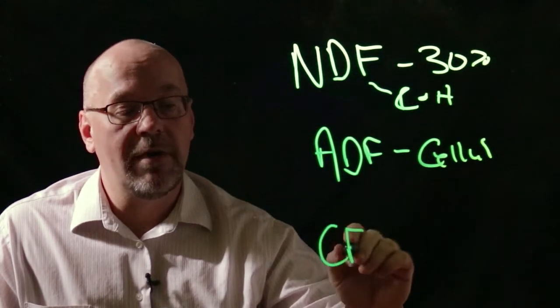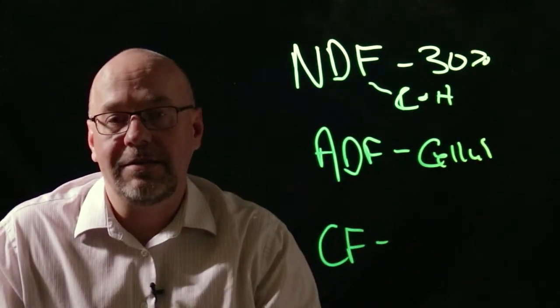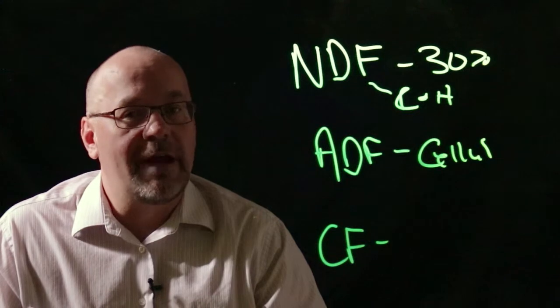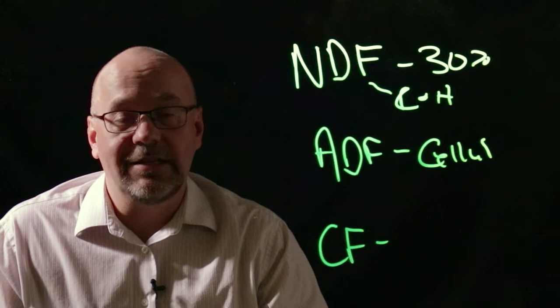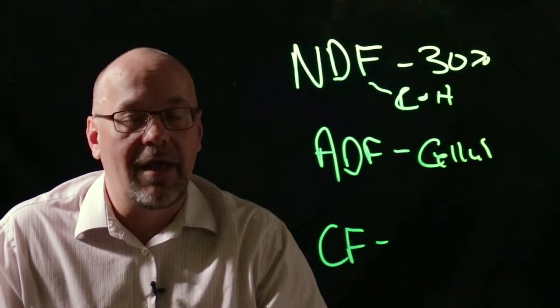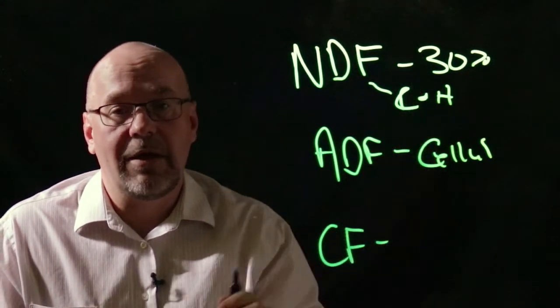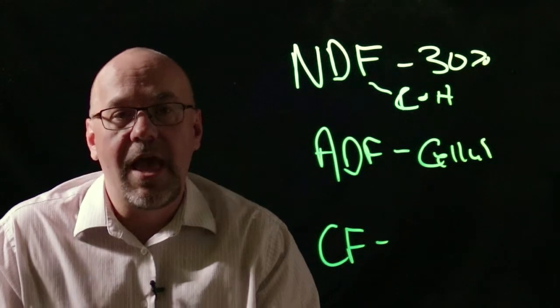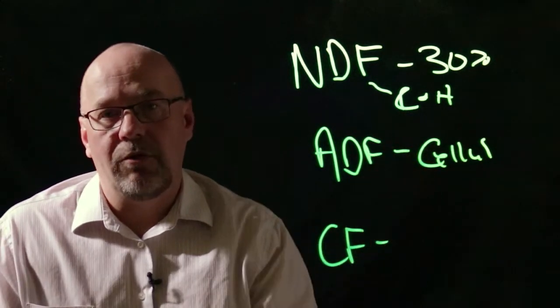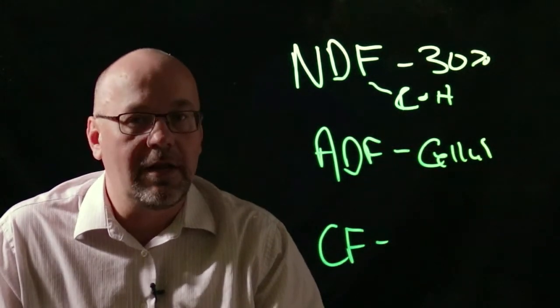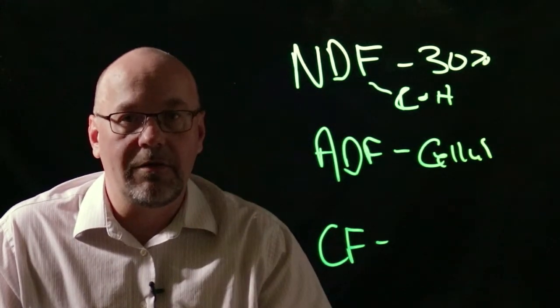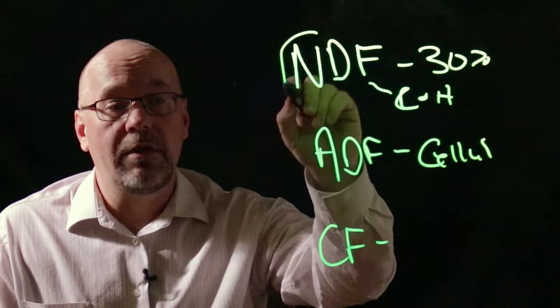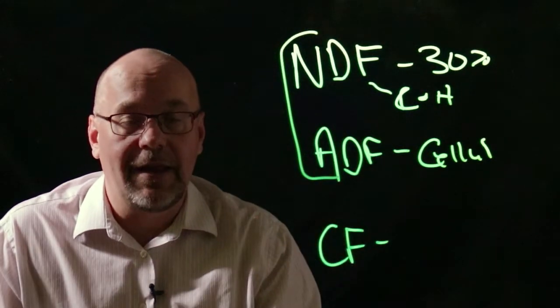Another measure that you'll often see quite a bit is crude fiber. Now crude fiber has been around for a very long time. One of the disadvantages of crude fiber is it has very little nutritional value. Although it measures similar amounts of cellulose and hemicellulose it only measures a portion of each component and as a result we really don't get a true characterization of the fiber when we're just looking at crude fiber. As a result you'll see the industry moving towards NDF and ADF.